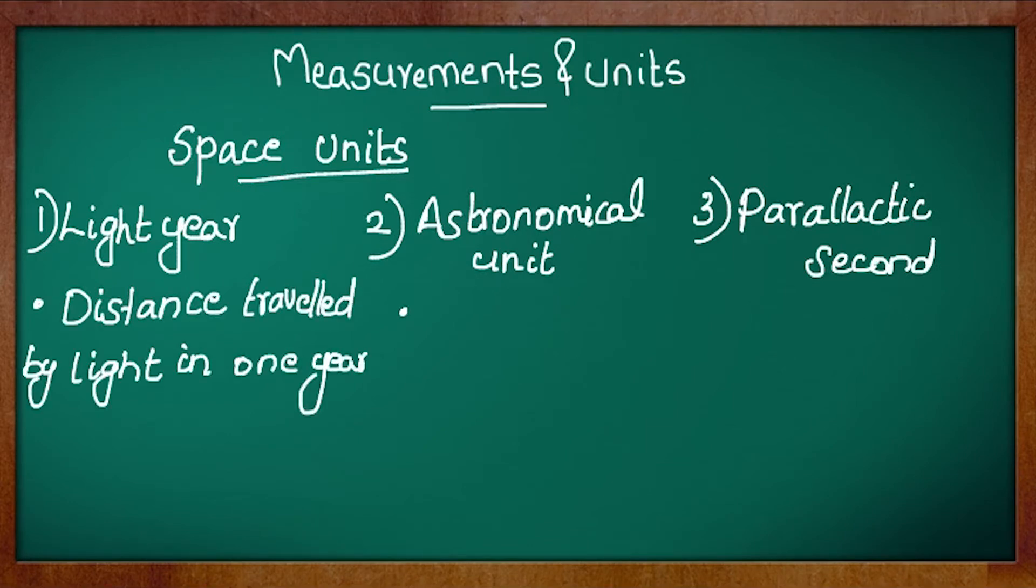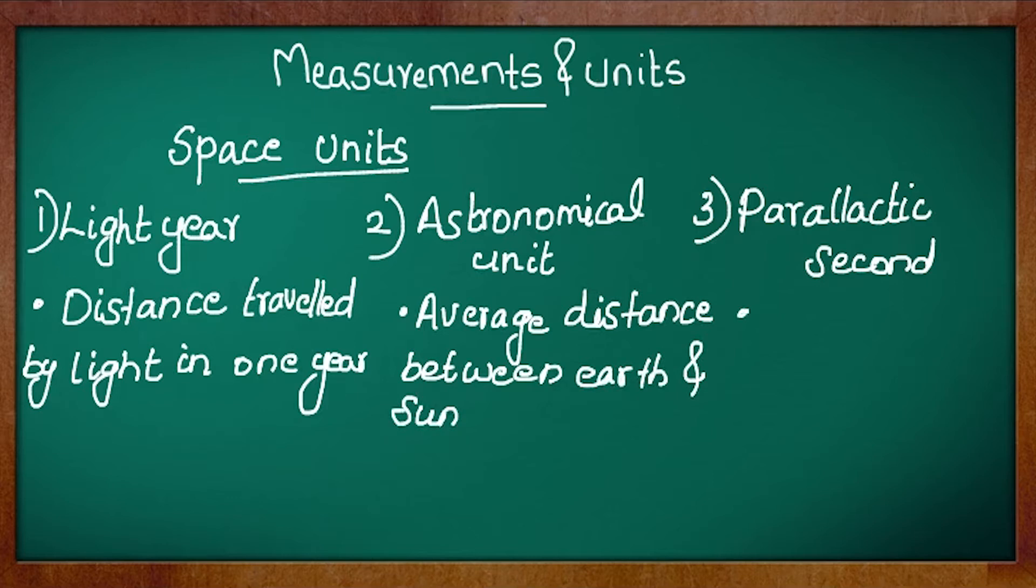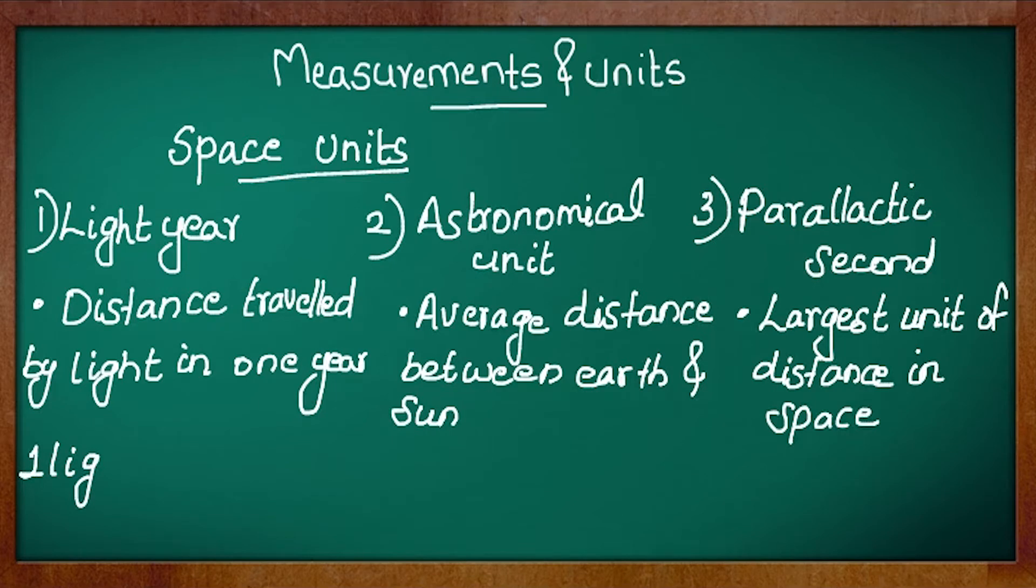Light year is defined as the distance travelled by light in one year. An astronomical unit is the average distance between earth and sun and parallactic second is the largest unit of distance in space.